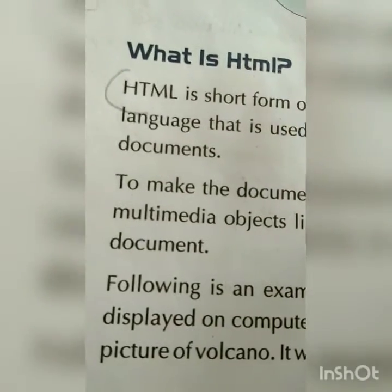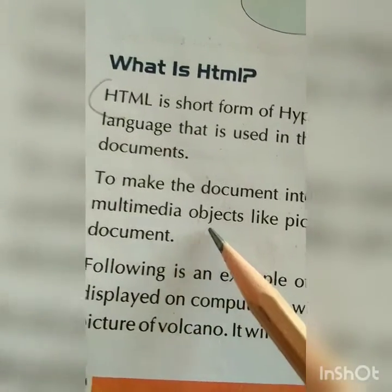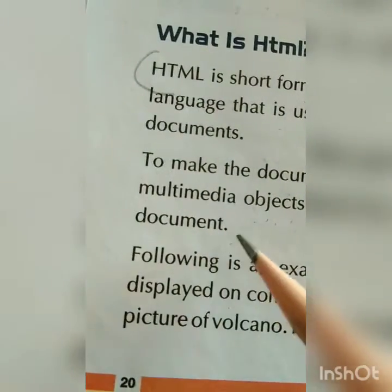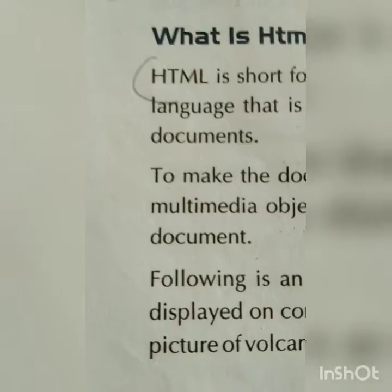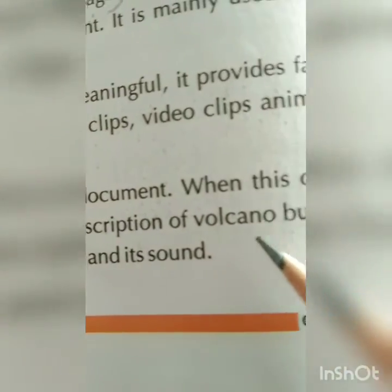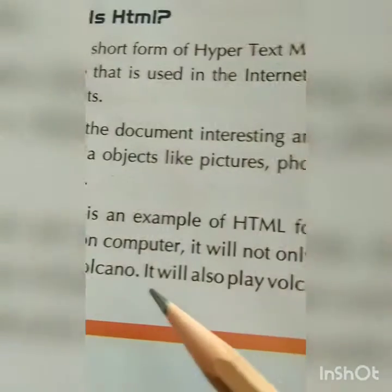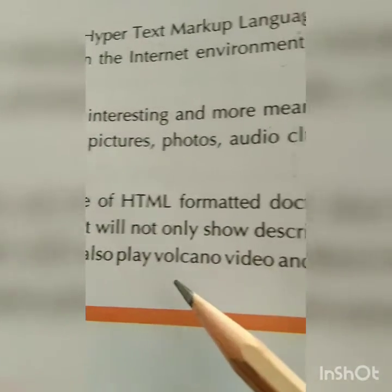With the help of HTML there is a type of code or program you write, and then only you can make the document interesting and more meaningful. It provides the facility to include multimedia objects — like pictures, photos, audio clips, video clips, animation, etc. — in the document. Following is an example of an HTML formatted document. When this document is displayed on the computer, it will not only show descriptions of a volcano.